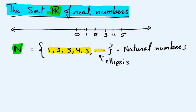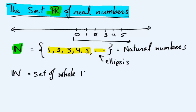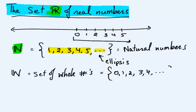If we combine zero with the natural numbers, we get what is called the set of whole numbers. This is the set which has in it zero, one, two, three, four and so on. The only difference between the set of natural numbers and the set of whole numbers is the addition of zero.